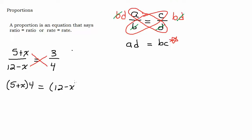Again, you could put the 3 in front if you want. And so I'm going to distribute here and get 20 plus 4x equals 36 minus 3x.